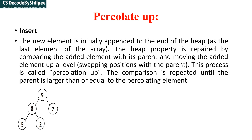In this class I am going to explain percolate up and percolate down. First we will see what percolate up is. Percolate up means that the new element is initially appended to the end of the heap. Suppose if I am going to append a new element, meaning if I am going to perform an insertion here.